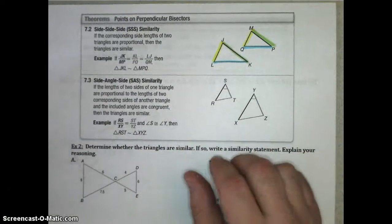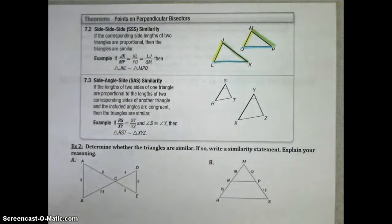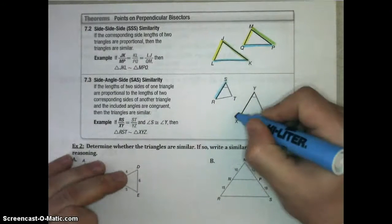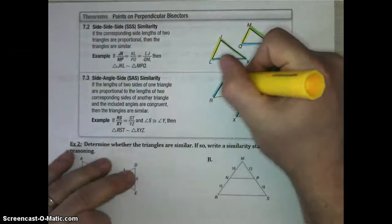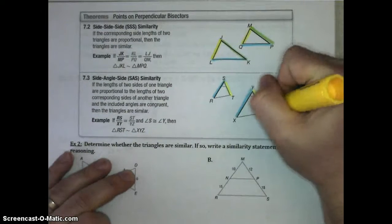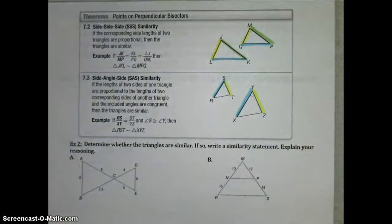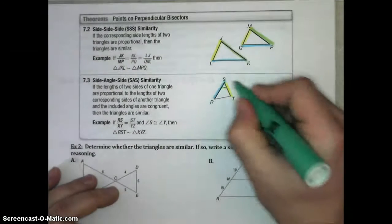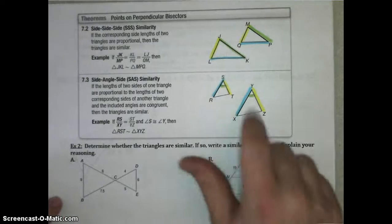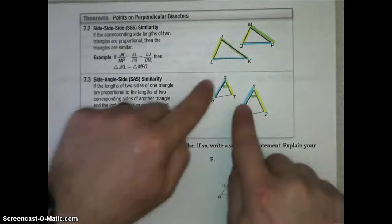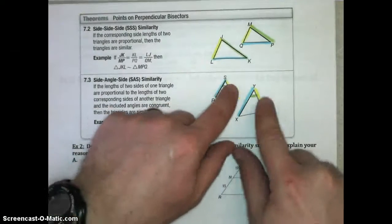And then our last one here is side-angle-side, and that says if two lengths of our sides are proportional to two other lengths of our sides, and if the included angles are congruent, then the triangles are similar by side-angle-side similarity.